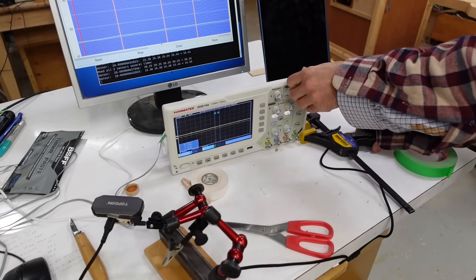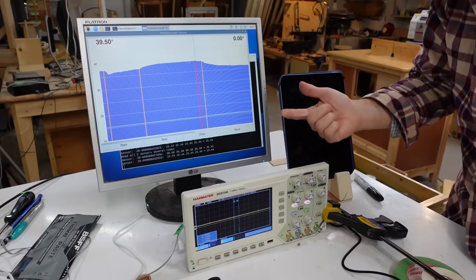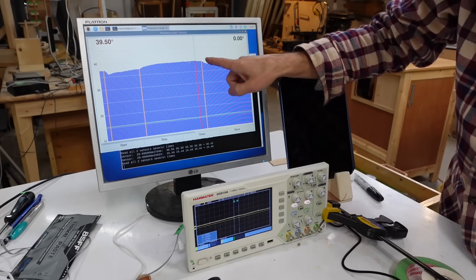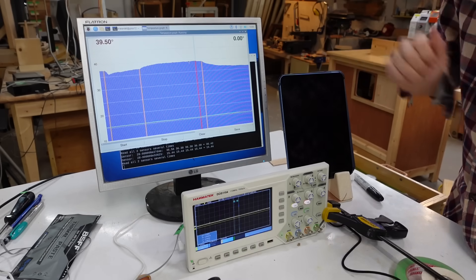And then I set it up vertical and just with it standing vertical like that we have better convection on the back and the temperature dropped by over 2 degrees just from that.